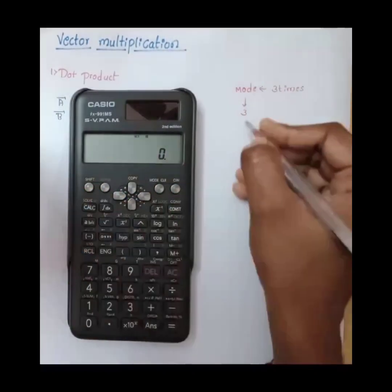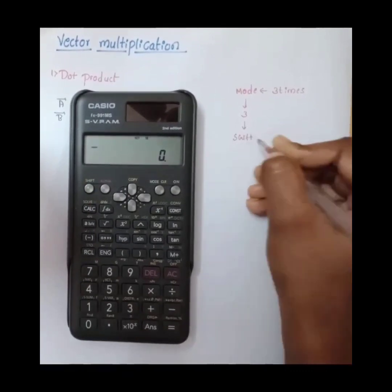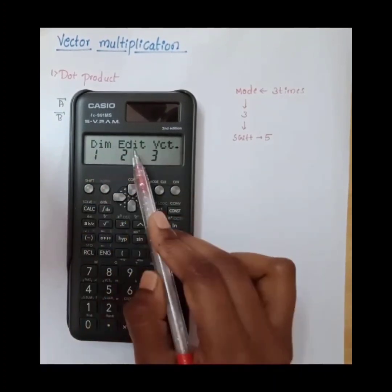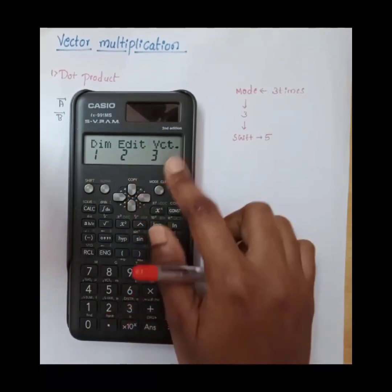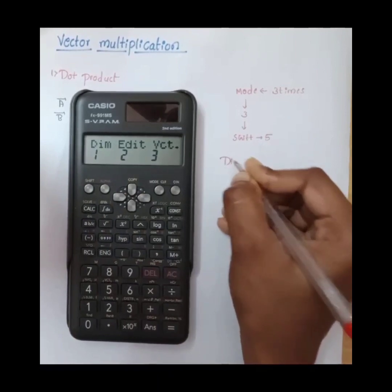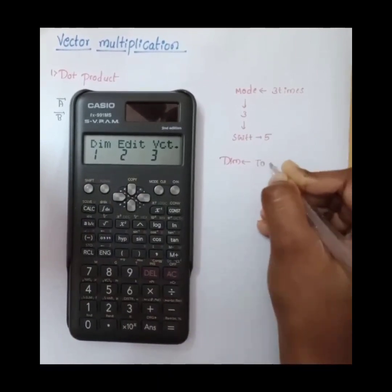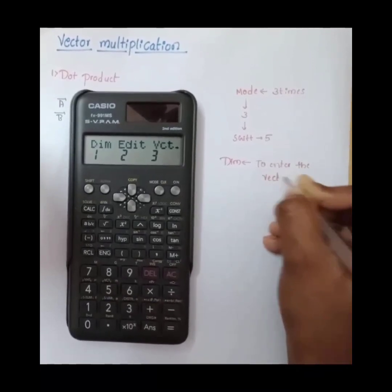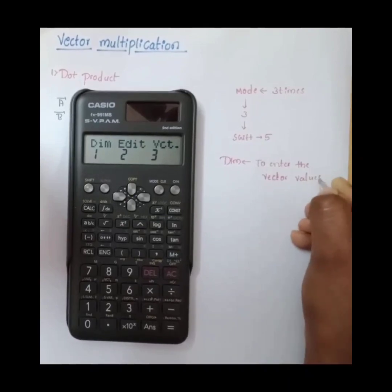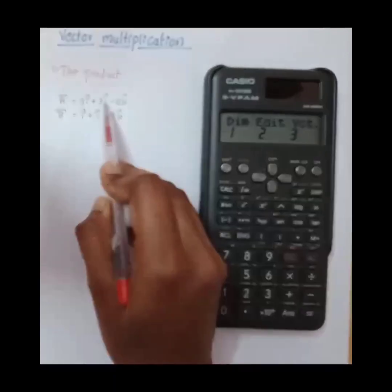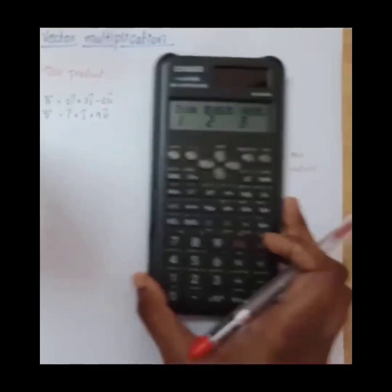Then press shift and five. Here we can see dimension, edit vector, and dot. We have to choose dimension to enter the vector values—the ax, ay, az values.